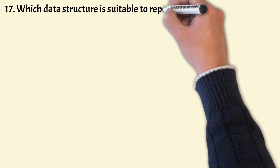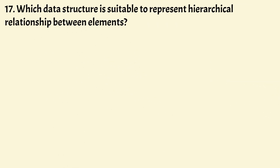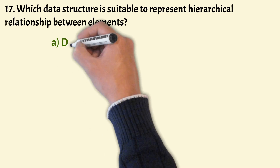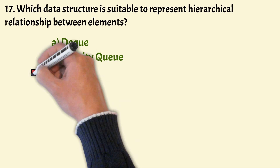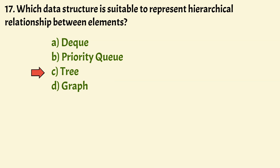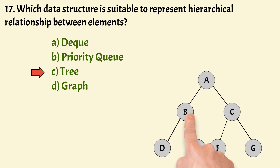Coming to the next question. Which data structure is suitable to represent a hierarchical relationship between elements? The options are: DQ, priority queue, tree, graph. The correct answer is Option C, that is tree. In a hierarchical relationship, items are linked to one another in parent-child relationships. Only the tree data structure can establish a parent-child relationship between elements. Trees are non-linear hierarchical data structures consisting of nodes connected to one another. A node can have any number of children and can be used to store hierarchical data such as folder structures.